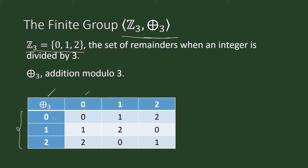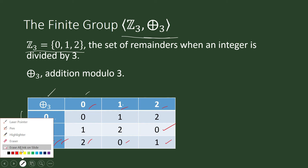Notice that 1+2 under addition modulo 3 is 0, because 1+2 = 3 and when you divide by 3 there is no remainder. Also, 2+0 = 2, 2+1 = 0 under addition modulo 3, and 2+2 = 1.